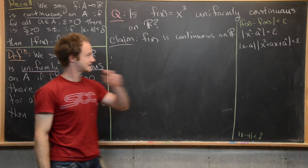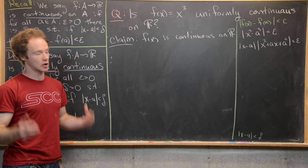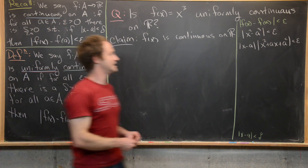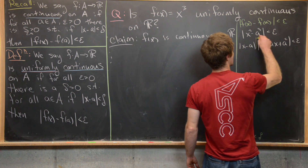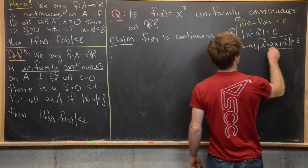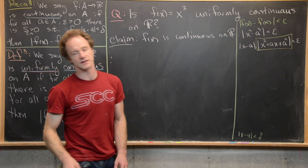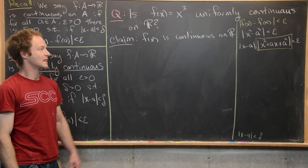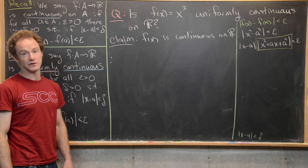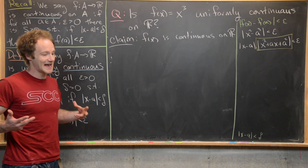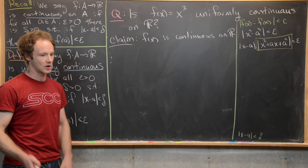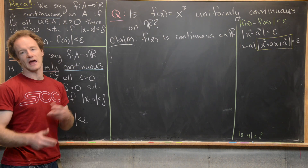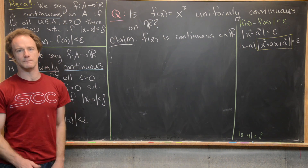We use a strategy from before: start with a test value of delta that is large, see what it would take, and in the proof use a minimum argument. So let's say delta equals one, meaning |x - a| < 1. That gives us two helpful pieces of information: first, x is between a - 1 and a + 1; and second, by squaring, x² - 2ax + a² < 1.